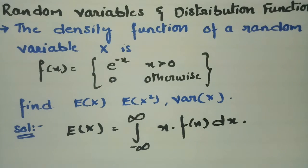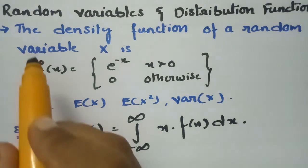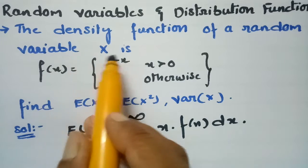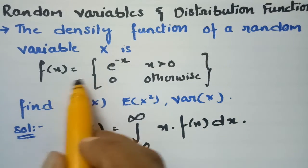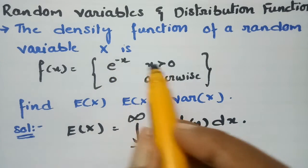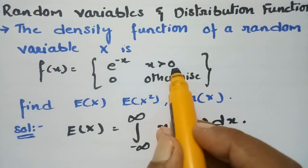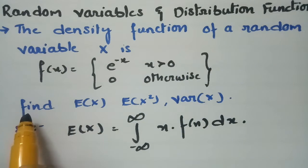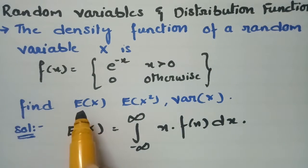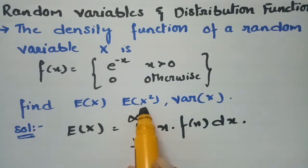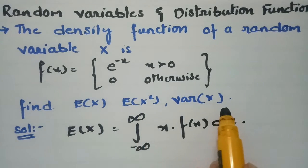This problem is from random variables and distribution functions. The density function of a random variable x is given as f(x) = e^(-x) when x is greater than 0, and 0 otherwise. We have to find the value of E(X), E(X²), and the variance of X.